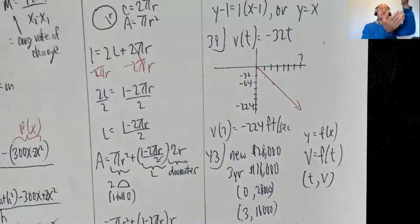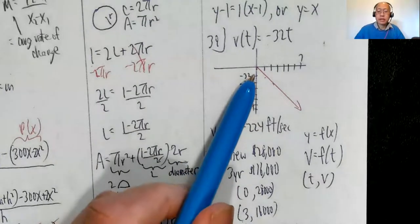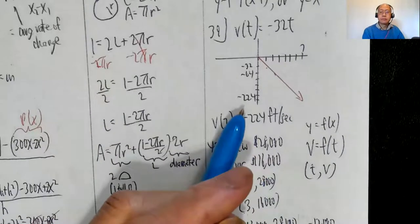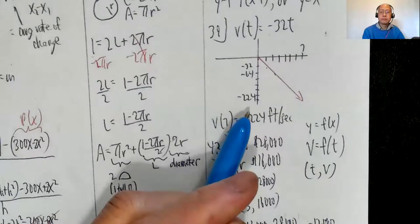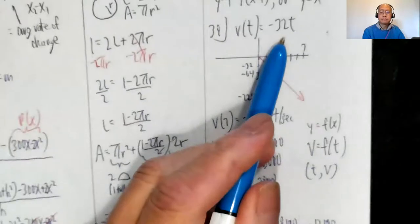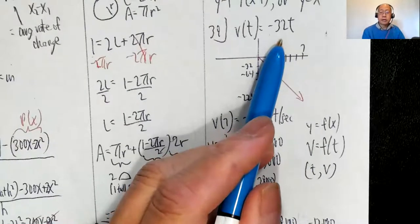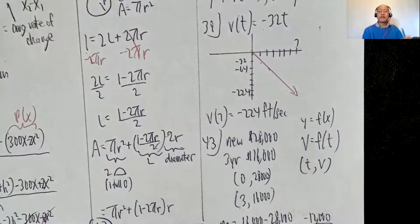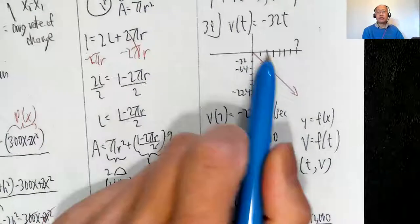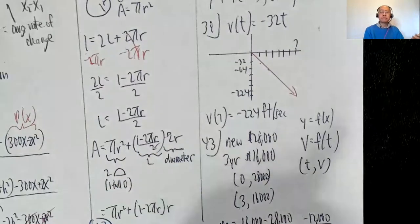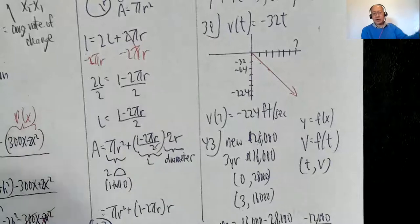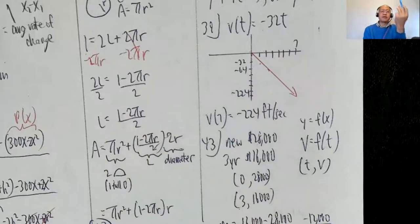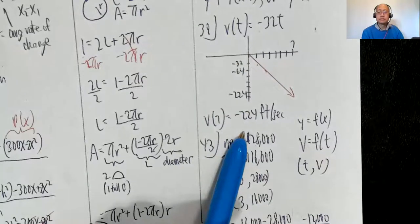The rock falls faster and faster as time goes on — that's why the velocity becomes more negative. The convention is that positive is up and negative is down. Since the rock is falling downward, the velocity is negative. If you just want to say it's falling at 224 feet per second, that's correct, but using the sign convention of positive-up and negative-down, we say negative 224.